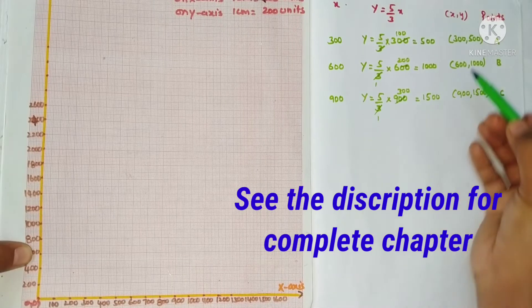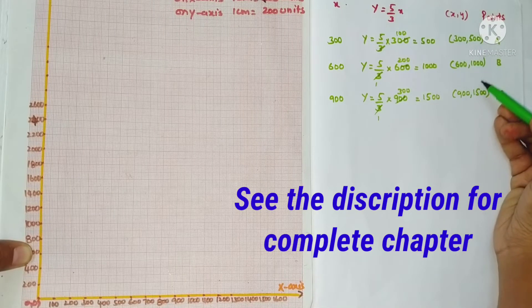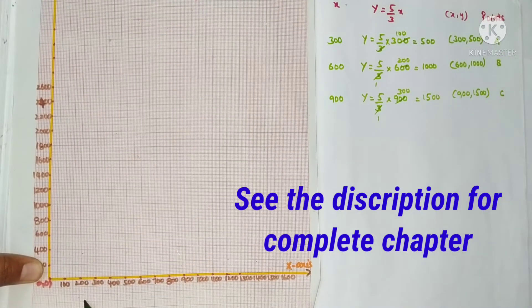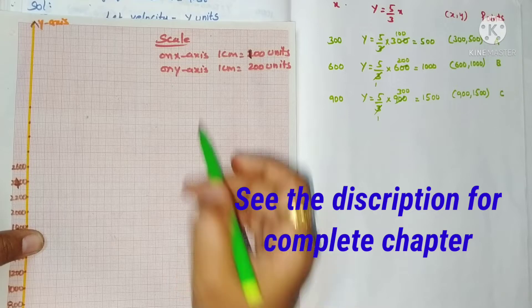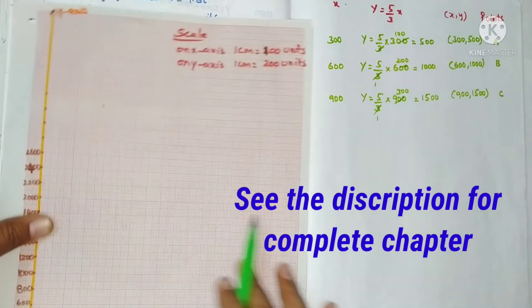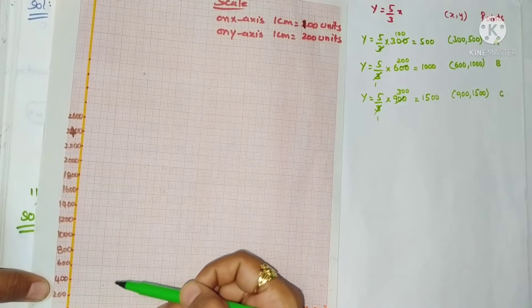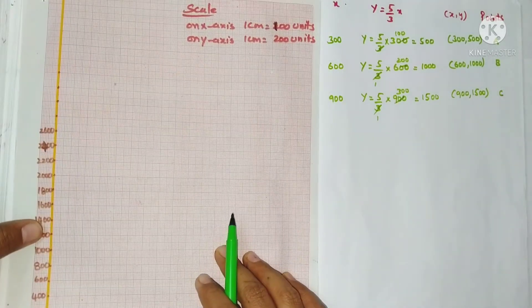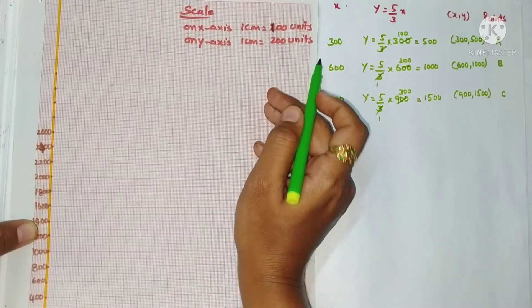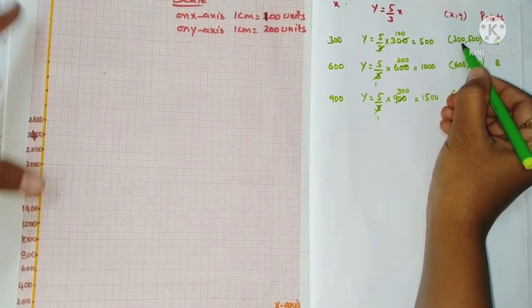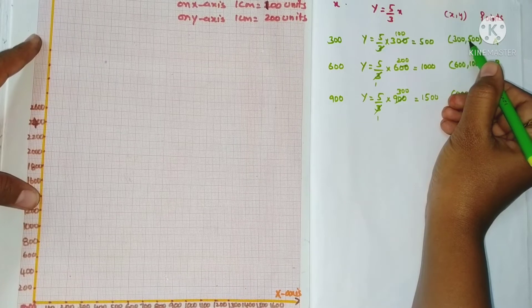All x values are in hundreds and y values are 500, 1000, 1500. On the x-axis I took 100, 200, 300, 400 — a gap of 100 each — so the scale on the x-axis is 1 centimeter equals 100 units. On the y-axis the difference is 200, and the maximum value is 1500, so 1 centimeter equals 200 units.